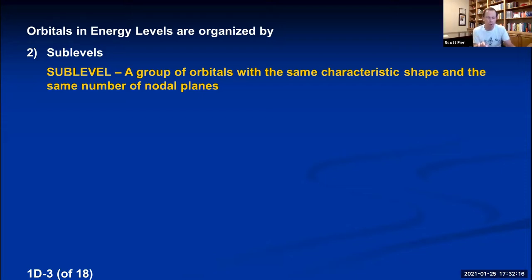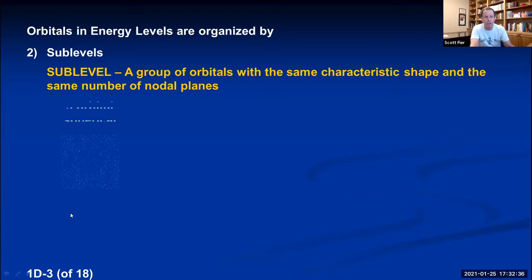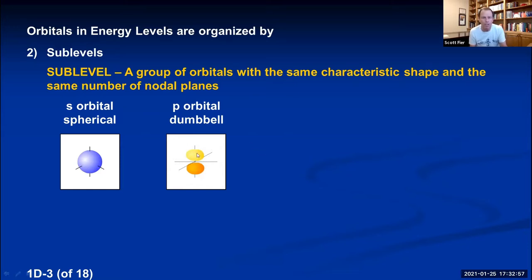When you graph solutions to the Schrödinger equation, orbitals do not always come out spherical. Many orbitals that exist in the hydrogen atom are spherical — we call those S orbitals, and a group of spherical orbitals in an energy level makes up the S sublevel. Sometimes you get an orbital with high probability above and below the nucleus but nothing on the sides — that looks like a dumbbell. Those are called P orbitals and they make up the P sublevel.